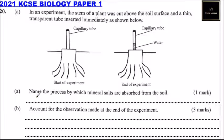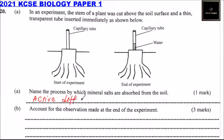Part A of the question: name the process by which mineral salts are absorbed from the soil. The process here is active diffusion. That is how water and minerals are absorbed from the soil.